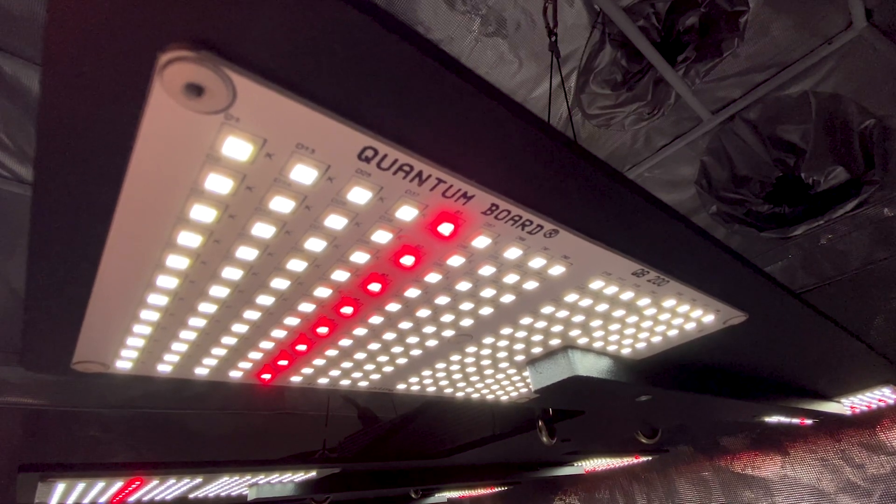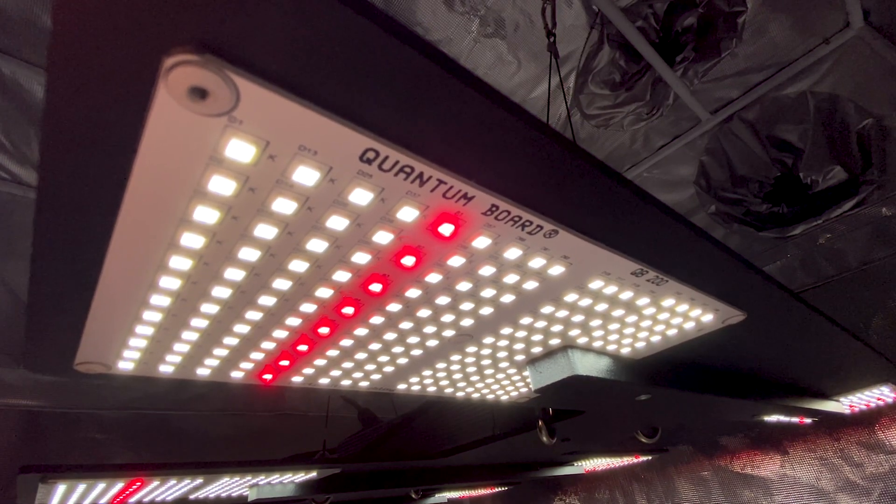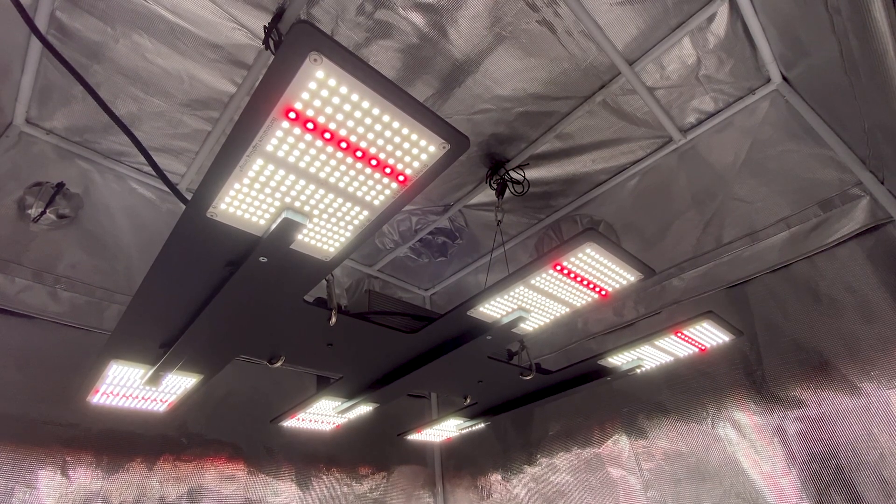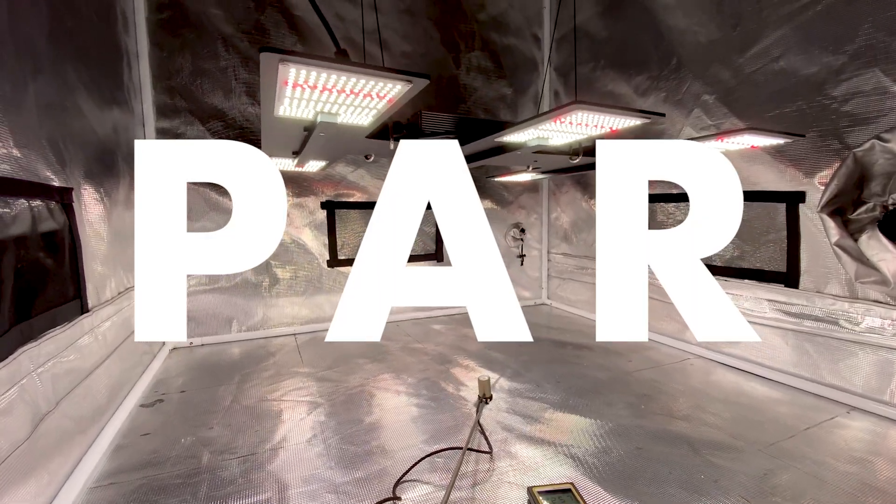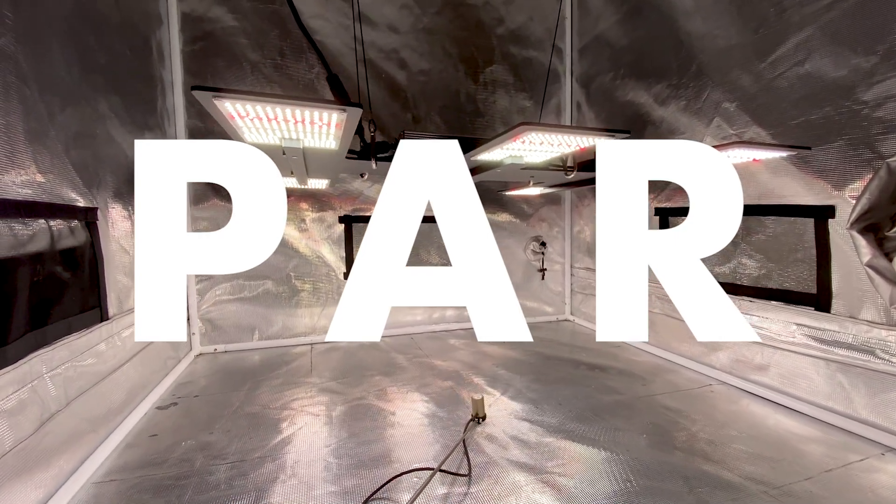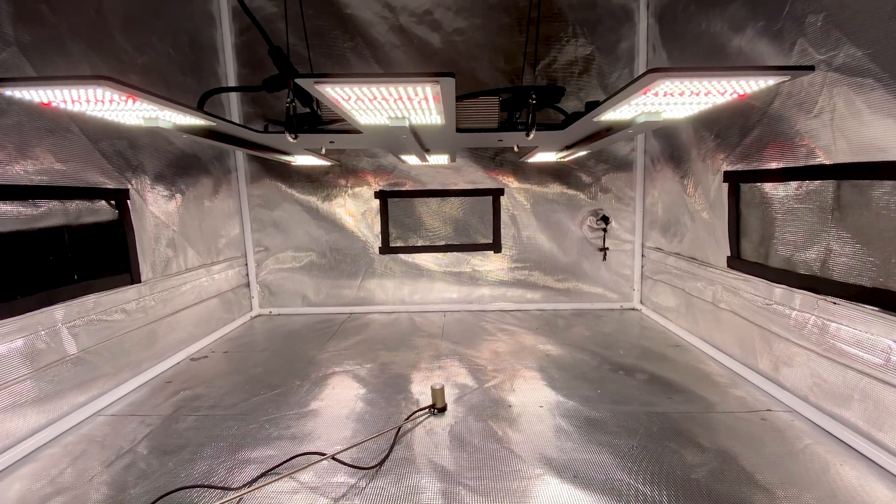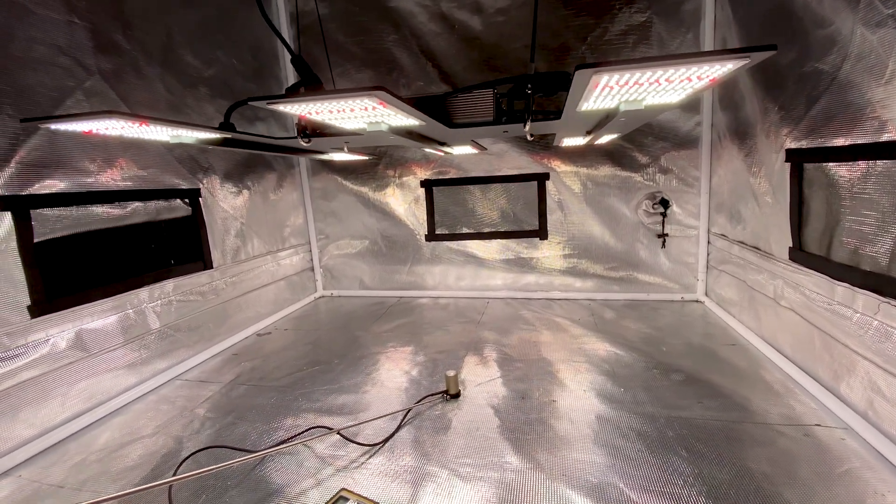The spectrum can be used for seedling to harvest growth and we recommend using the dimmer to dim the light down for seedlings, clones, and veg and then turning up the intensity for flowering. I took PPFD readings of the fixture at full power in a 4x4 Gorilla Grow tent at a few different distances.